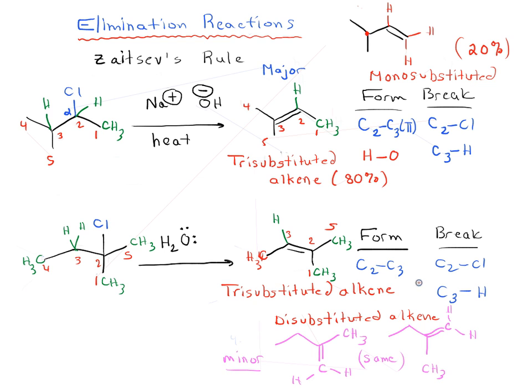And, again, this is our major product. Again, roughly 80%. And our di-substituted alkene, our minor product, roughly 20%. This is just a rough estimate.